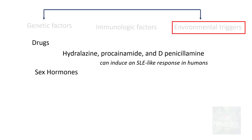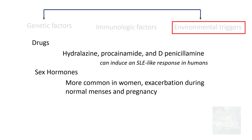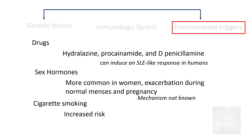It is very important to know the role of sex hormones in SLE, because SLE is more common in women and is exacerbated during normal menses and pregnancy. Though the mechanism is not fully known, estrogen does play a major role in the development of SLE. Cigarette smoking also increases the risk. Infections, particularly Epstein-Barr virus infection, can trigger systemic lupus erythematosus.